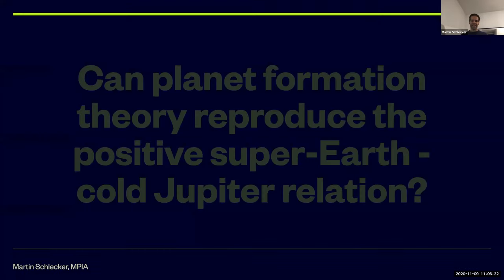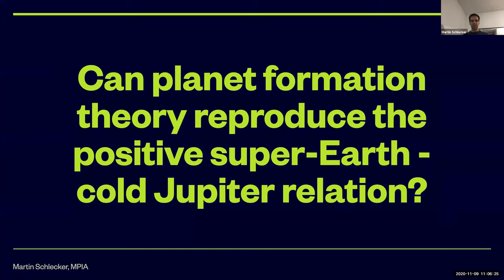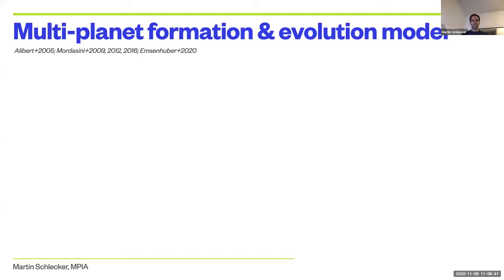So can we understand this? Is this something our planet formation models can reproduce? Before I give you the answer to that question, I should tell you a little bit about what model our results are based on and what assumptions we make. This is based on the so-called Bern model, a global planet formation model — global meaning that it tries to incorporate a lot of underlying physical mechanisms that are important for multi-planet formation. It has been continuously developed over the course of many years, so I can really give you just some highlights.